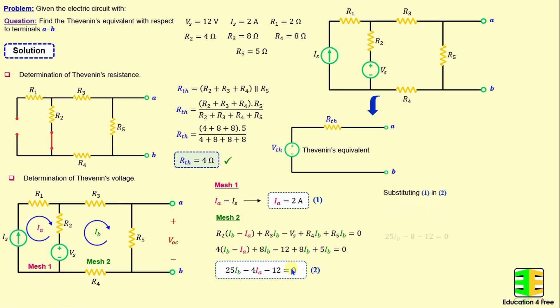Now, by substituting equations 1 and 2, we derive one equation in terms of Ib, and if we continue simplifying this equation, we obtain Ib is equal to 20 over 25 amps.